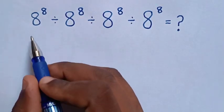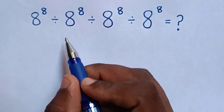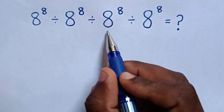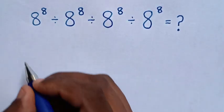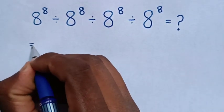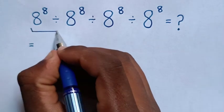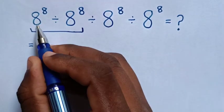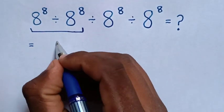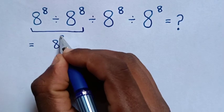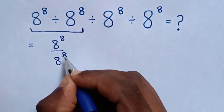Hello. How to solve 8 power of 8 divided by 8 power of 8 divided by 8 power of 8 divided by 8 power of 8. So, it will be equal to: we start to deal with the first operation — 8 power of 8 divided by 8 power of 8 is the same as 8 power of 8 over 8 power of 8.